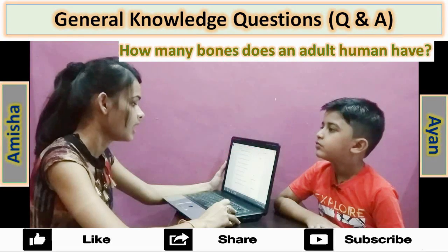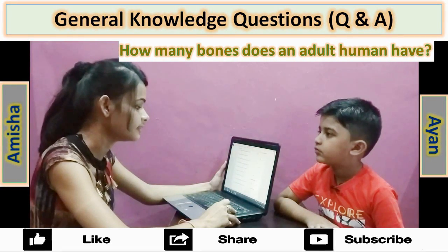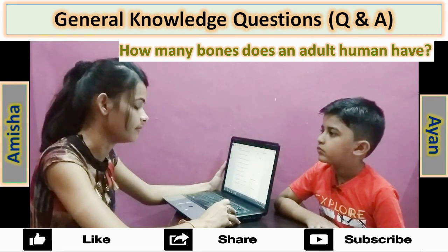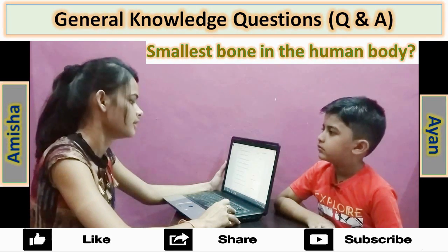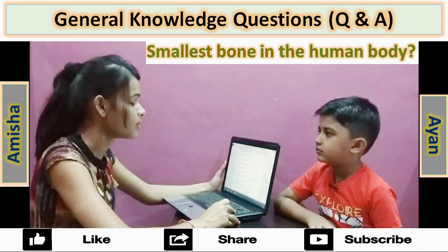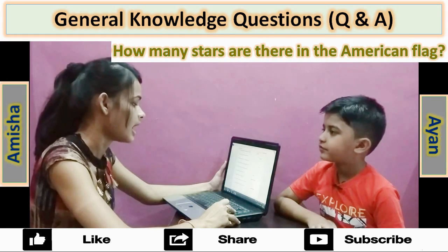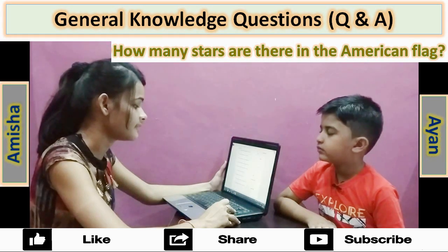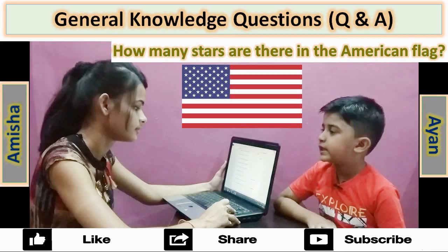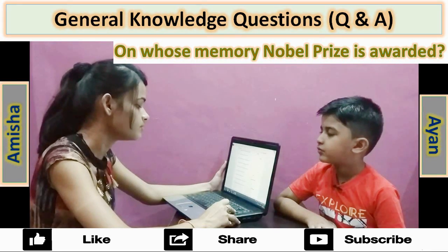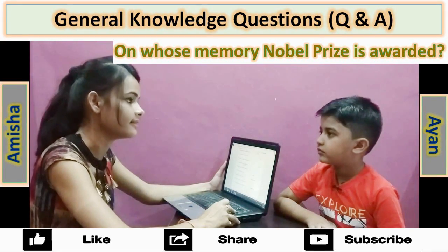How many lungs does the human body have? 2. How many bones does an adult human have? 206. Smallest bone in the human body? Stapes. How many stars are there in the American flag? 50. On whose memory is the Nobel Prize awarded? Alfred Nobel.